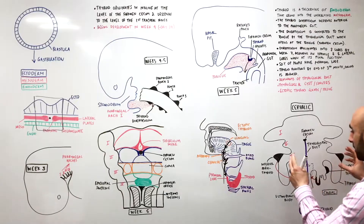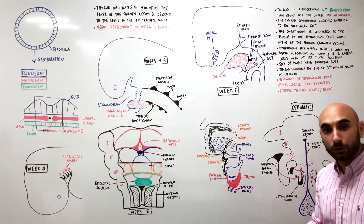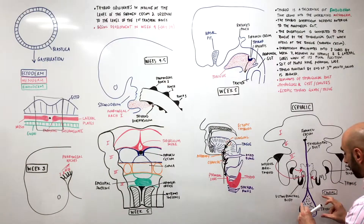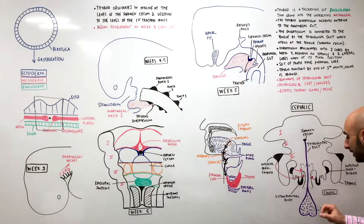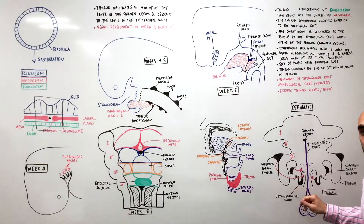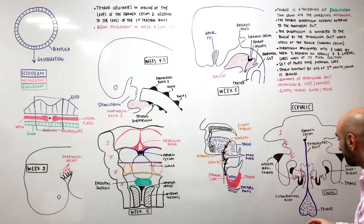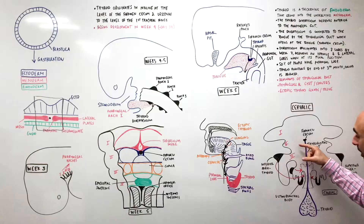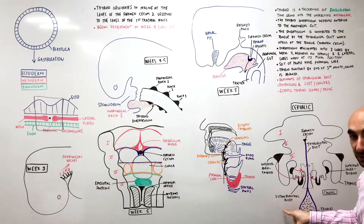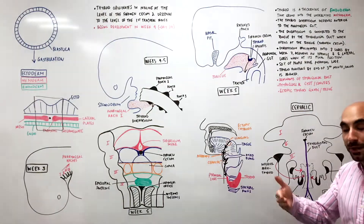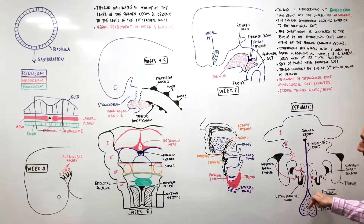So, inferior and superior parathyroid glands come from pharyngeal pouches 3 and 4 respectively. But the thyroid tissue isn't completely from the endoderm at the pharynx — from the pharyngeal pouches we also have the ultimobranchial body, which contributes parafollicular cells, or C-cells. Not only do the inferior and superior parathyroid glands detach and try to find the thyroid as it descends, but the ultimobranchial body — the future parafollicular C-cells — also detach and join the thyroid as it descends into its final position.